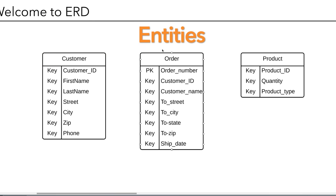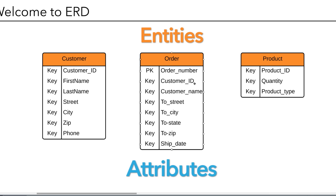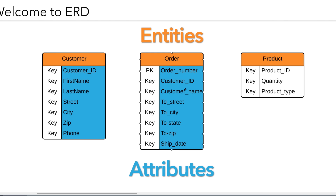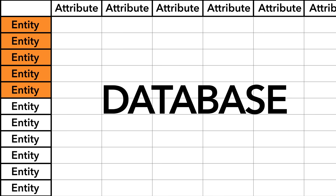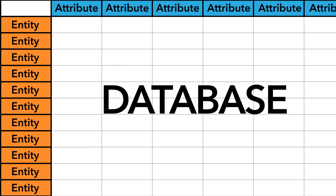Each one of these entities is going to have what we call attributes, which are various properties or traits. In this case, under the customer entity we have a customer ID, first name, last name, street, city, zip, and phone. It's important to remember that the entities in your database will be the rows, and the attributes in your database will be depicted as the columns.